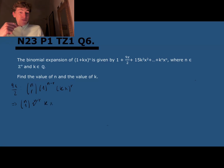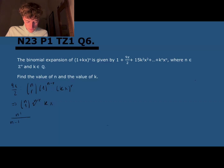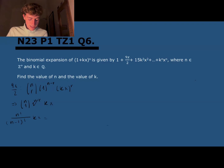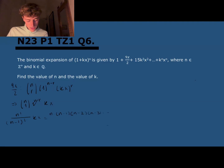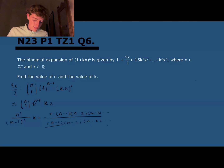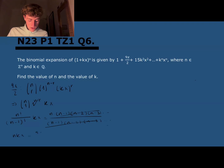n choose 1 is n factorial over (n minus 1) factorial times 1 factorial. Since n factorial is n times (n minus 1) factorial and so on, the (n minus 1) factorials cancel, leaving just n. So we get n times kx equals 9x/2. Crossing out the x's, we know nk equals 9/2. But with this alone we can't determine either n or k separately, so let's use the third given term.